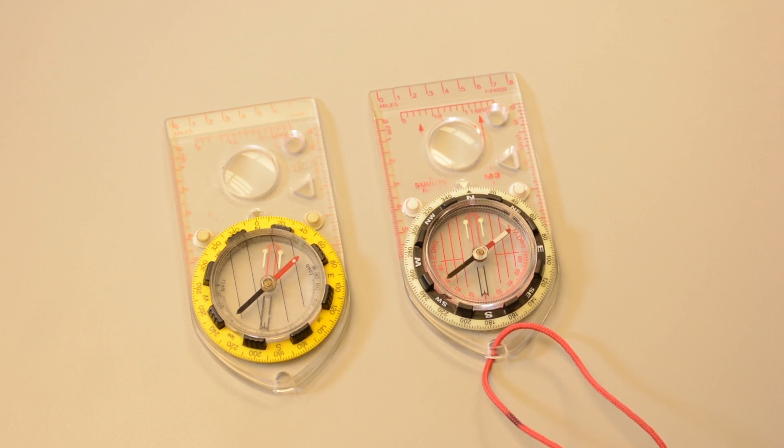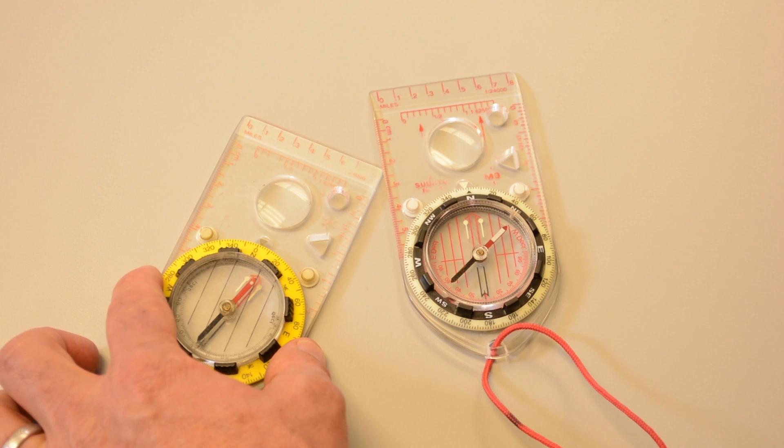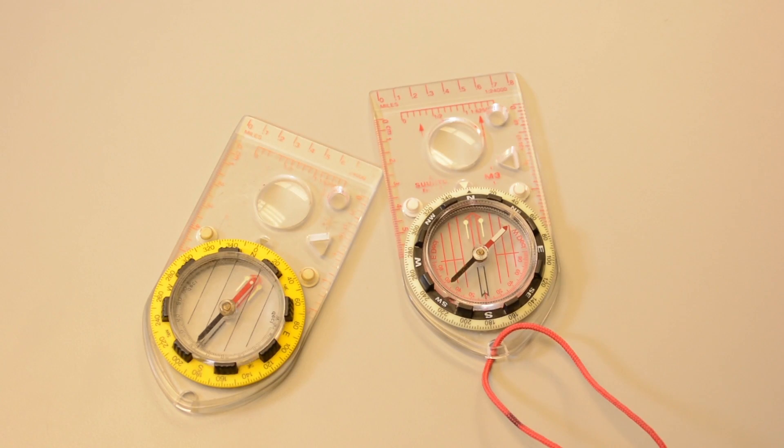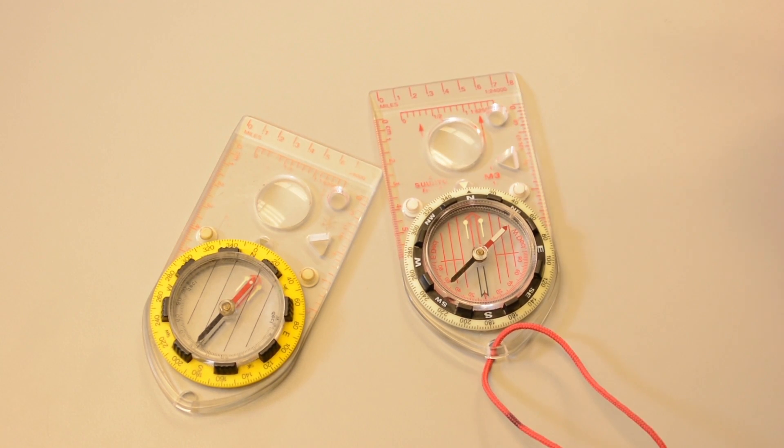Now when you line up the red end of the orienteering arrow, or as we cover in lesson two, red in the shed, we're compensating for the 16 degrees east declination and our actual bearing here is to true north. So in a nutshell, adjusting your declination simply means changing the direction to which your orienteering arrow points.